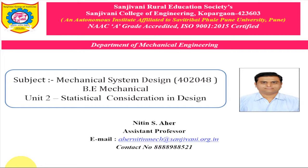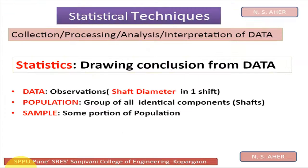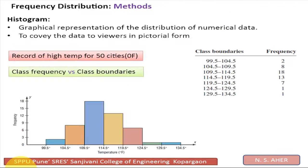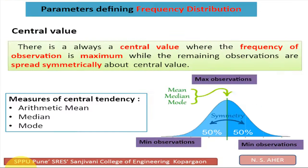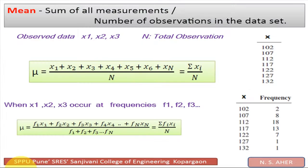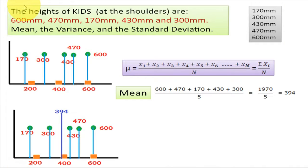Welcome to the course of Mechanical System Design. We are going to learn topic number two, that is statistical consideration in design. In the previous video we learned about what is mean of predictories, what is mean of frequency polygon, and what is mean of mean, median, and mode.